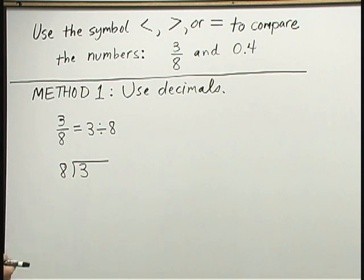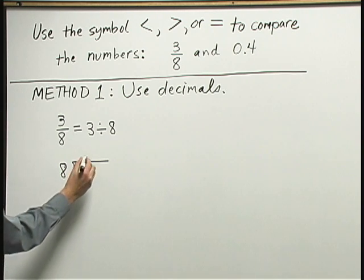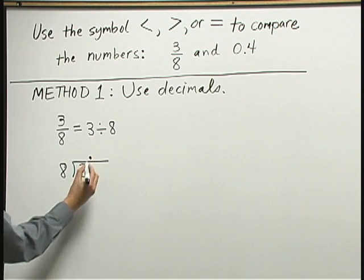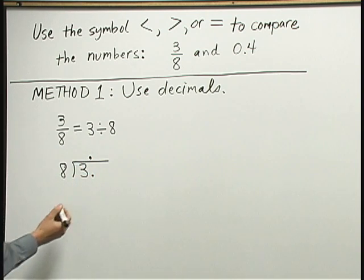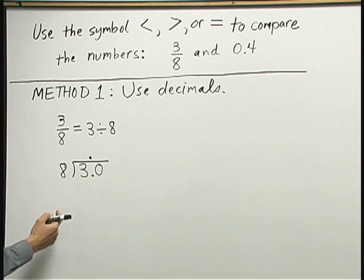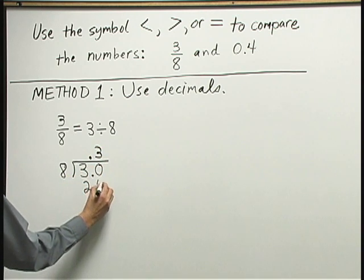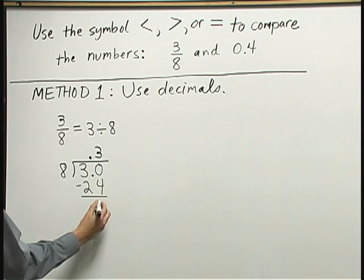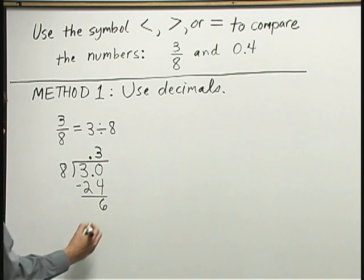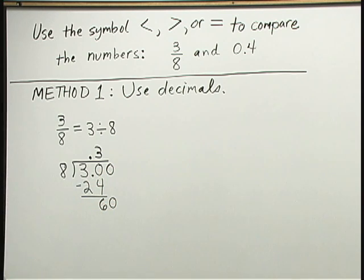Now, 8 doesn't go into 3 as a whole number, I can write down a decimal point, though, to the right of the 3, copy the decimal point up above in my answer space, and add a 0. 8 now goes into 30, I can think of this as 30 to get started, 8 will go into 30 three times, because 3 times 8 is 24. When I subtract, I get 6, and now I can add another 0 on, bring it down, and continue the process.